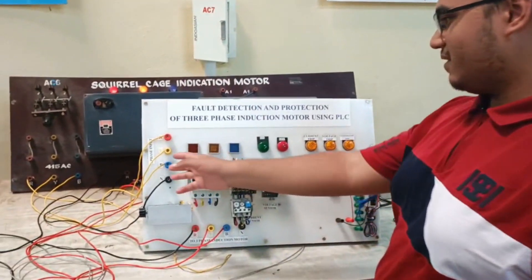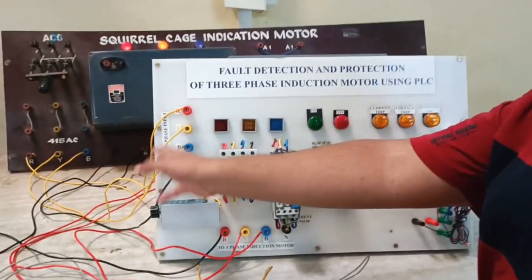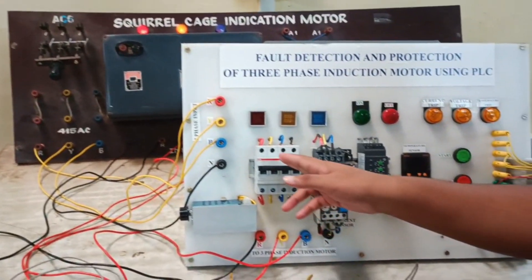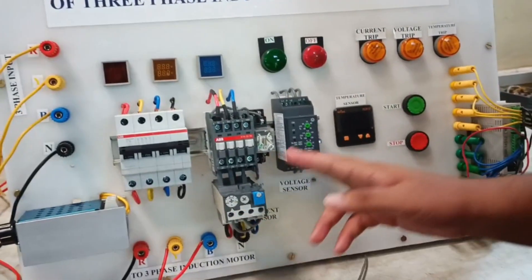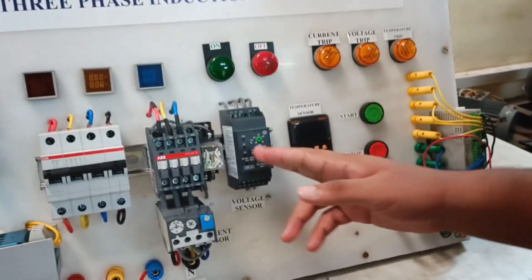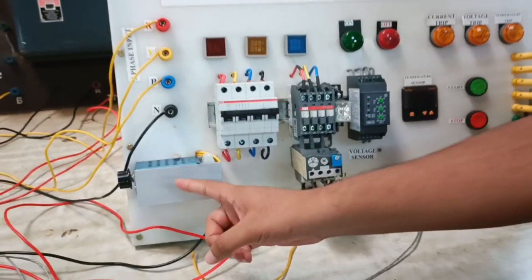So here we start with the 3 phase input, connected to the 3 phase supply. This is the MCB, this is the contactor, overload relay, over voltage, under voltage relay and this is the dimmer used to create the fault.